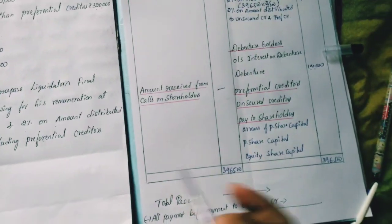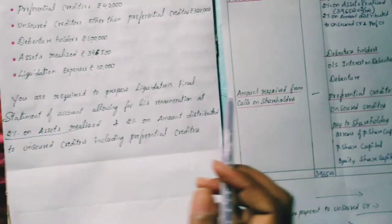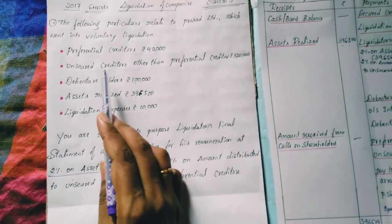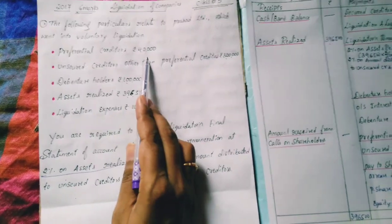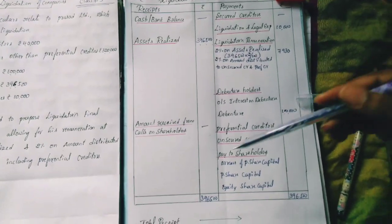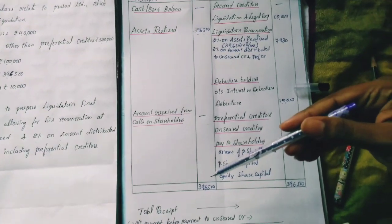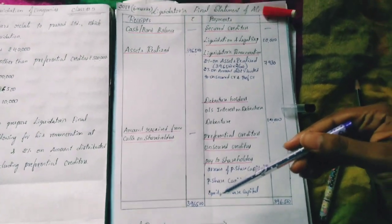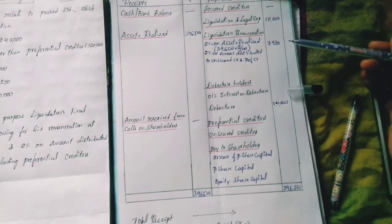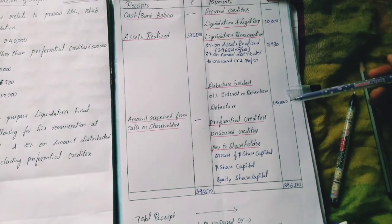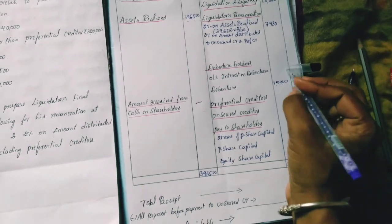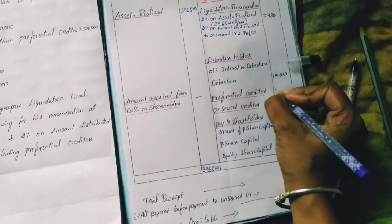Next, preferential creditors: their value is Rs.40,000. Now check the amount available. We have Rs.3,96,500 total. Minus liquidation expenses Rs.10,000, minus liquidator's remuneration Rs.7,930, minus Rs.1,00,000 for debenture holders. So Rs.40,000 can be paid to preferential creditors.